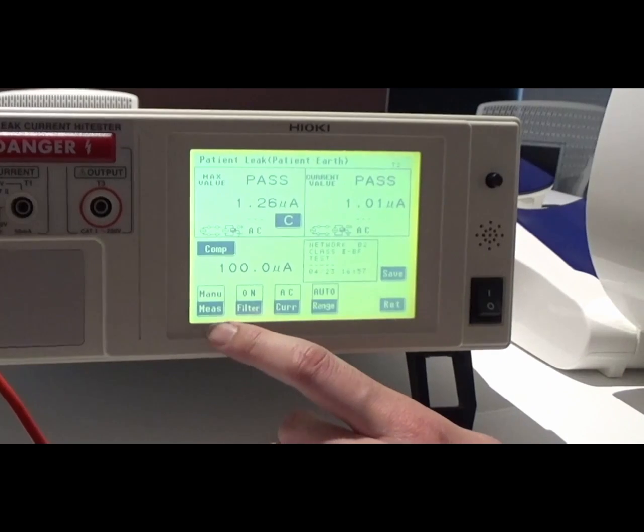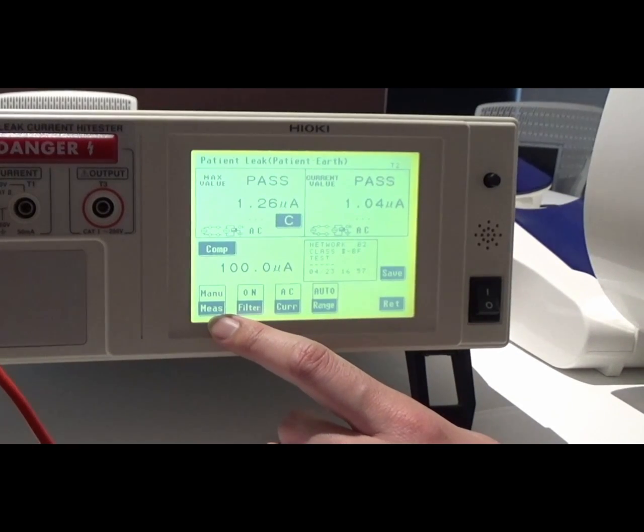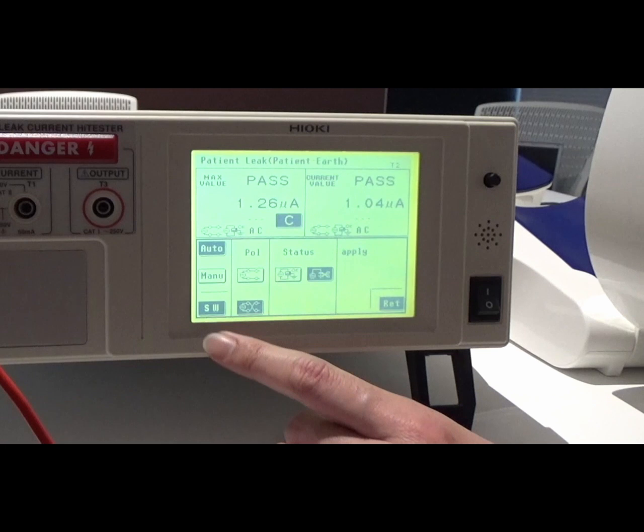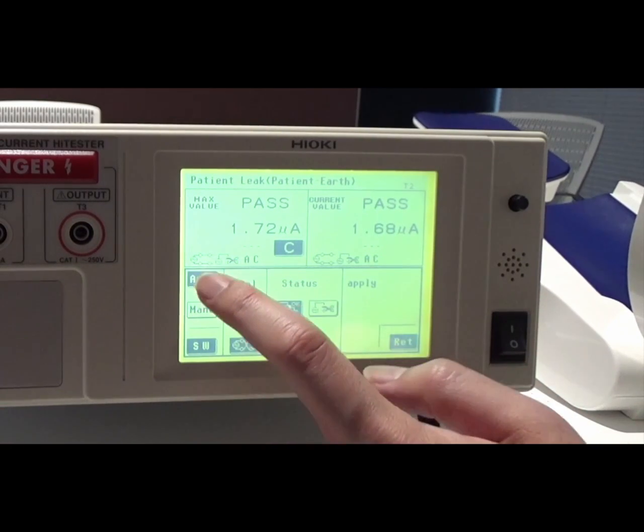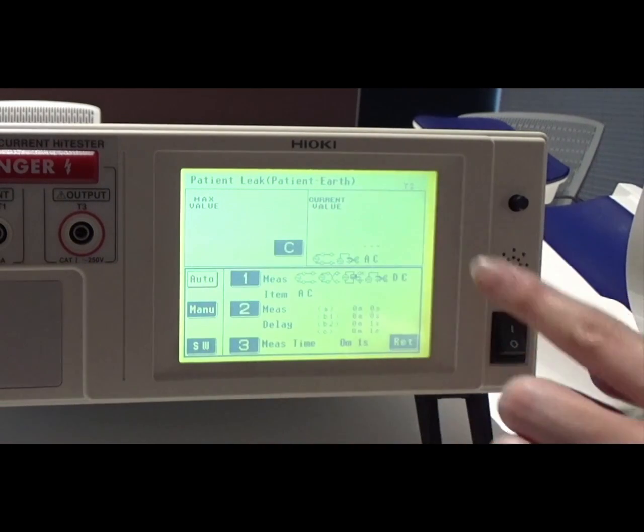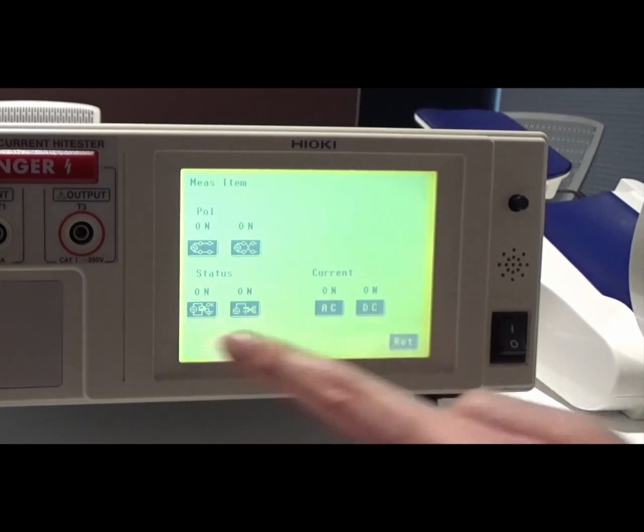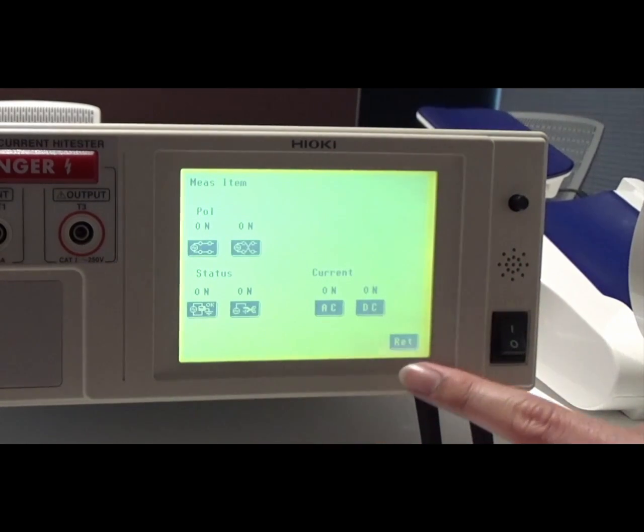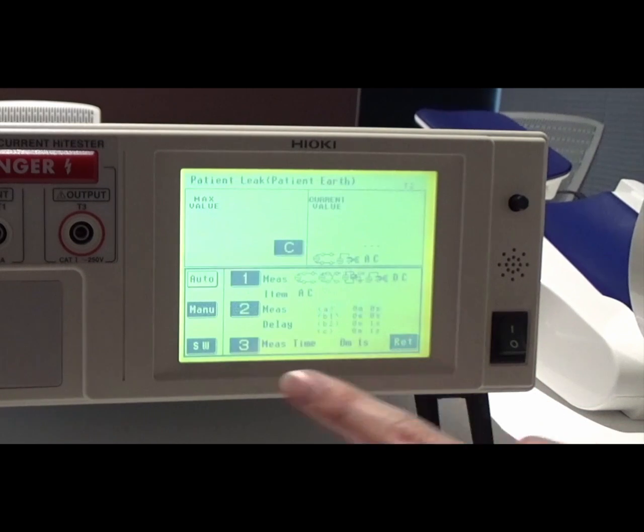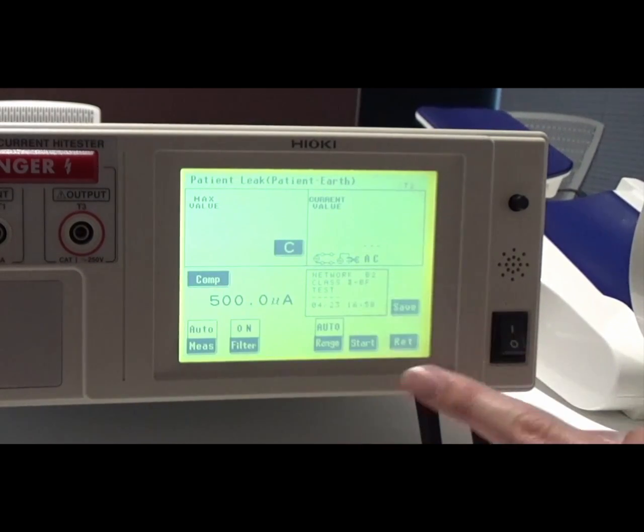I press this measured key and it simulates various malfunction conditions. Select auto as with the previous test. I press measured item. Now all items are set to on, I press the return key. The test will begin when I press the start key.